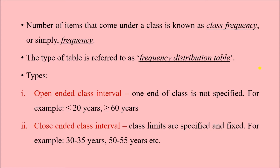A frequency distribution table can be of two types based on the type of class interval. In an open-ended class interval, one end of the class is not specified — for example, 'less than 20 years' or 'more than 60 years,' where the lower or upper limit is not clearly defined. In a closed-ended class interval, both limits are specified and fixed — for example, 30 to 35 years, 50 to 55 years, etc.